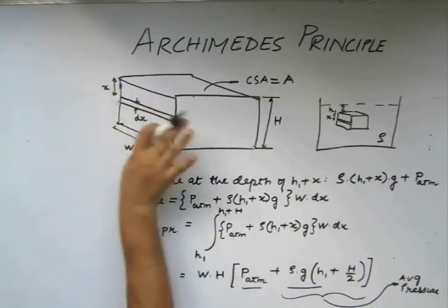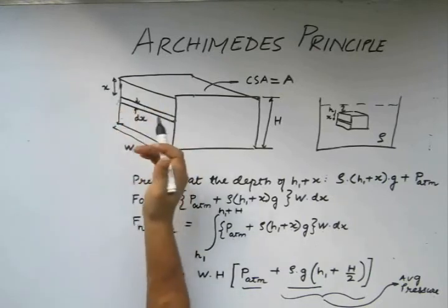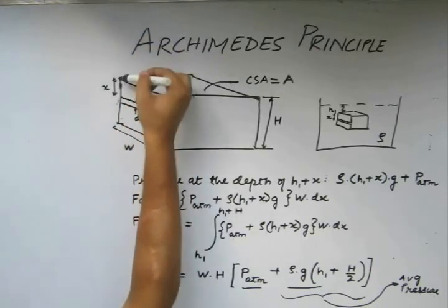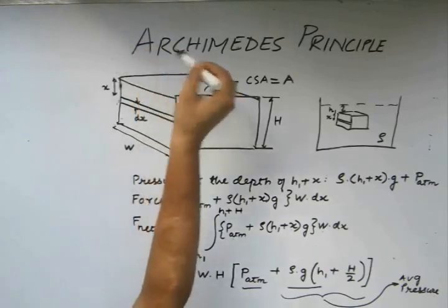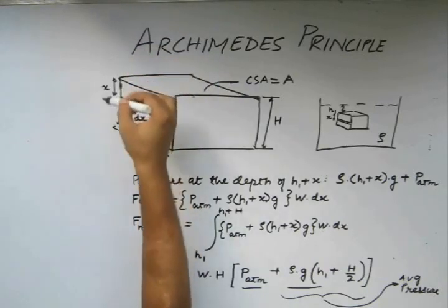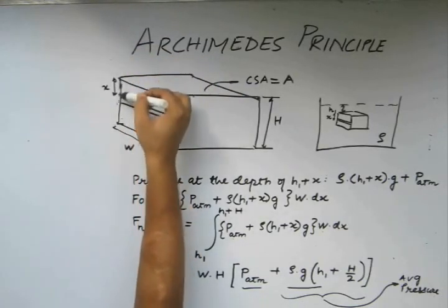So the net force acting on this face can be directly written as pressure due to this column of the fluid, which is ρgh1 plus the atmospheric pressure, plus ρg times (H/2).